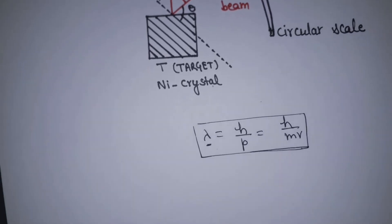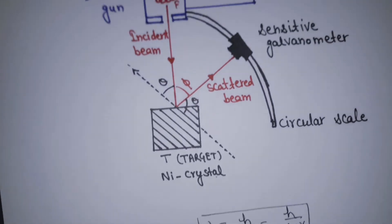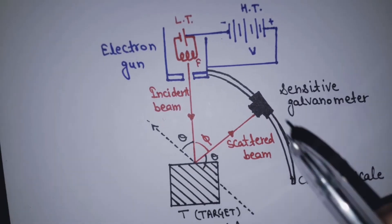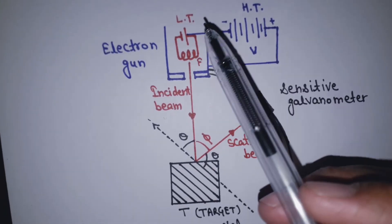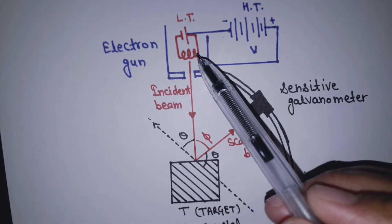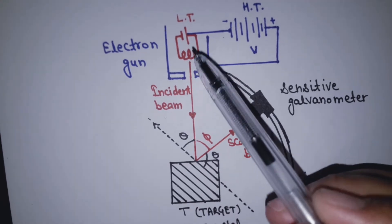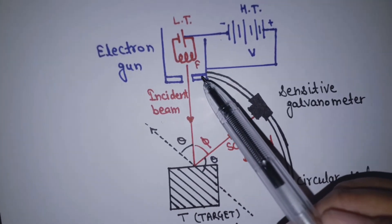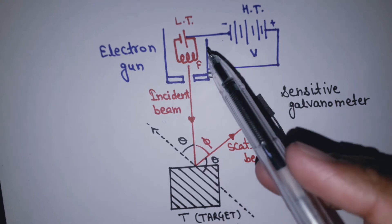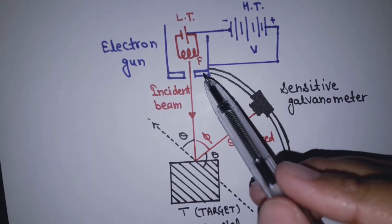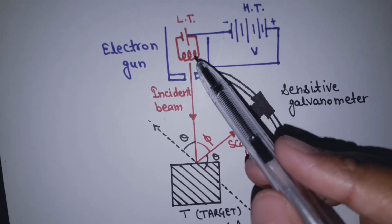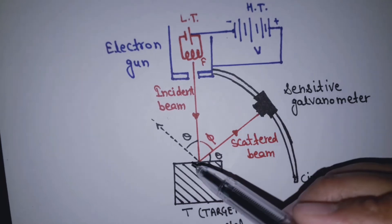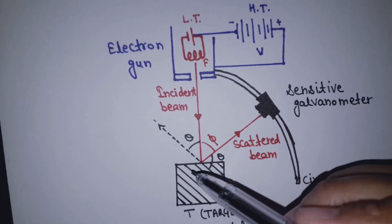Now let's see the experimental setup. In this experiment, we have taken an electron ejected from thermionic emission. We have made an anode and cathode combination to collimate it, creating a beam and accelerating it.